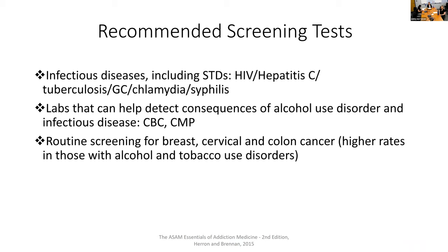We also draw a complete blood count and a complete metabolic panel — that's the CBC and CMP — because these help us detect consequences of alcohol use disorder and infectious diseases. Also, oftentimes the medication that we're starting requires baseline renal or liver testing, so that's another reason why we get those.